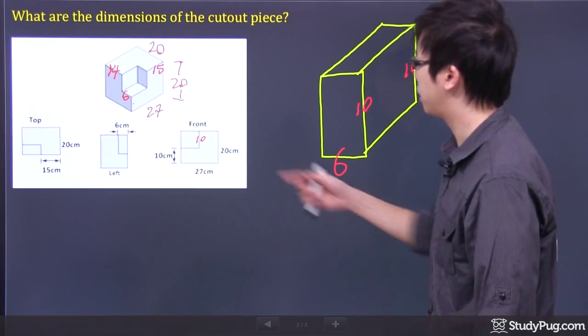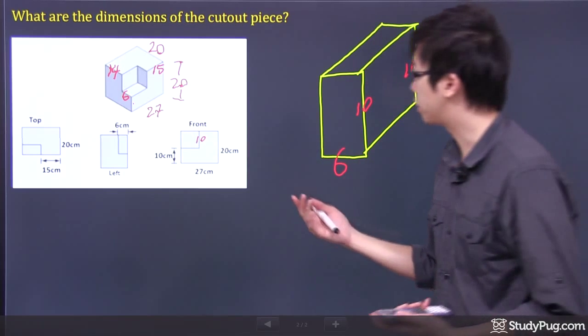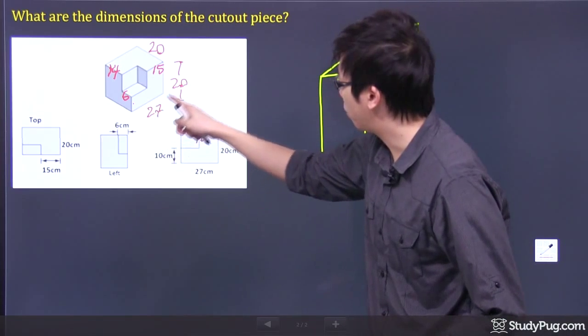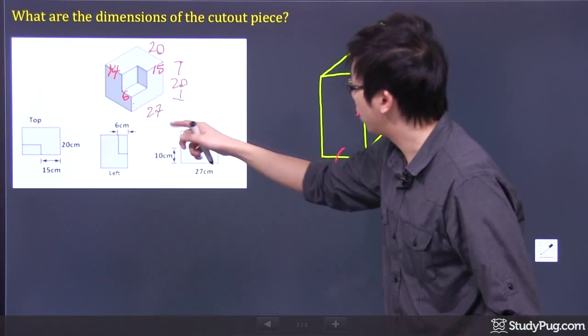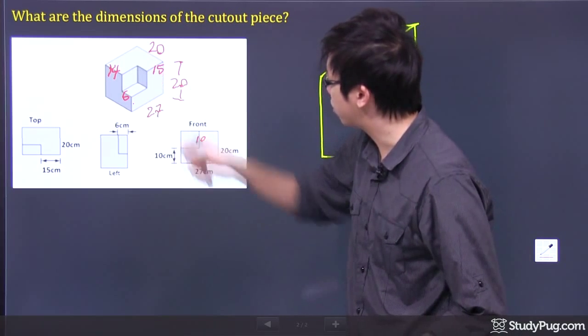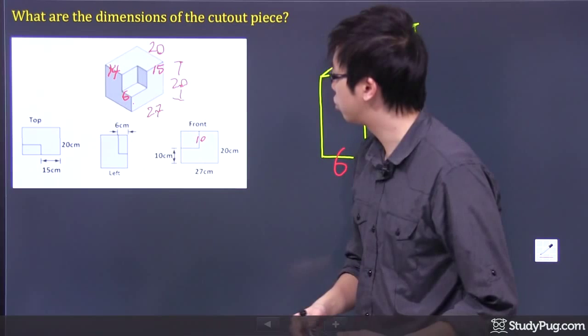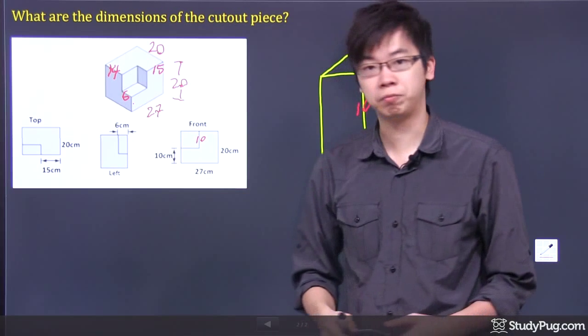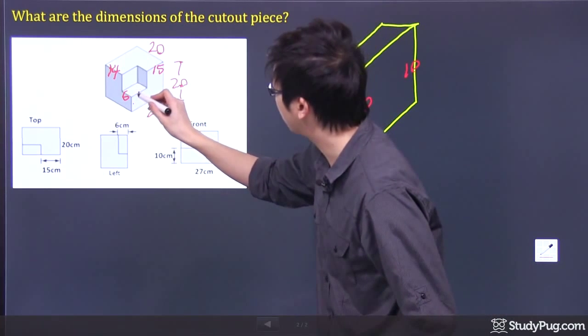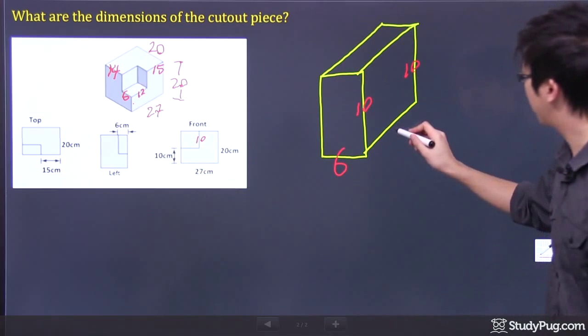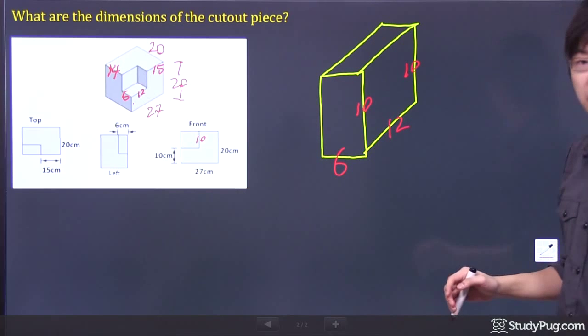So the only thing that we're missing is actually, oh, it's not missing, we know this whole thing is 27, right? Now if you take that 27 and subtract the 15 on the top, you get yourself just the 12. And that 12 will go right there. So we just figured out our last dimension right here, which is 12.